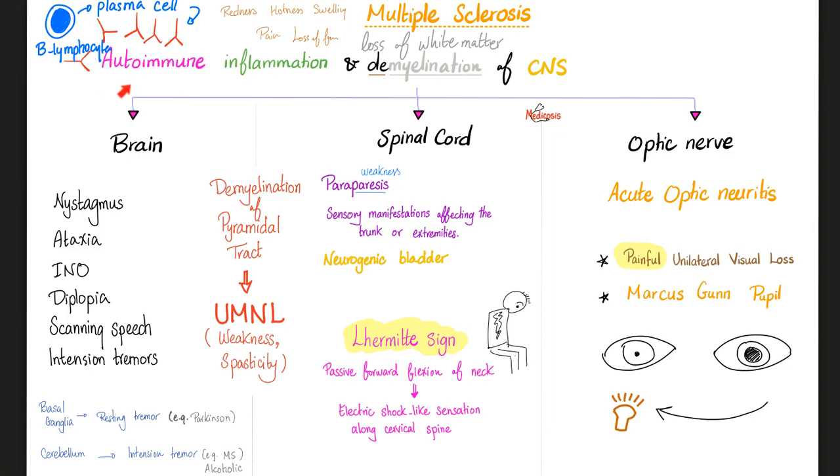Multiple sclerosis is an autoimmune disease. You have autoantibodies destroying your myelin. Your oligodendrocytes are toast. It's also an inflammatory condition—a demyelination condition of the central nervous system. You lose white matter. White matter will appear more grayish on MRI. What is the central nervous system? Brain, spinal cord, and the optic nerve. You'll get brain problems: nystagmus, ataxia, internuclear ophthalmoplegia, diplopia, scanning speech, intention tremors.